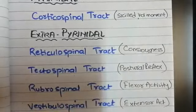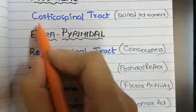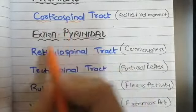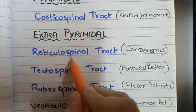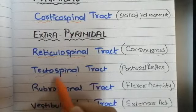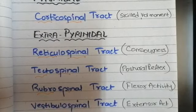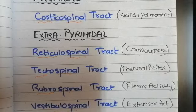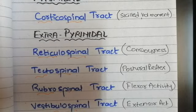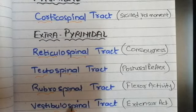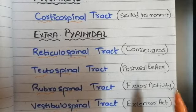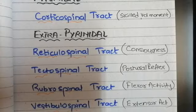From the names you can easily tell that these are the tracts running from the cortex towards the spinal cord, from the reticular formation towards the spinal cord, from the tectum towards the spinal cord, from the red nucleus (rubro) towards the spinal cord, and from the vestibular towards the spinal cord. From these pathway names you can understand where the first-order neuron starts and at which level of the spinal cord it terminates.